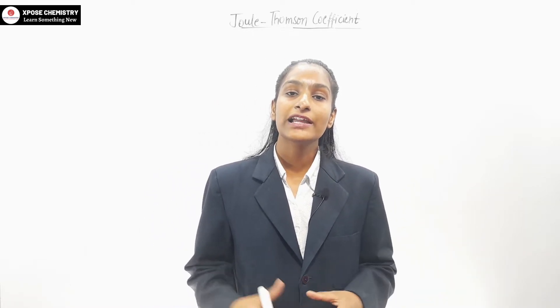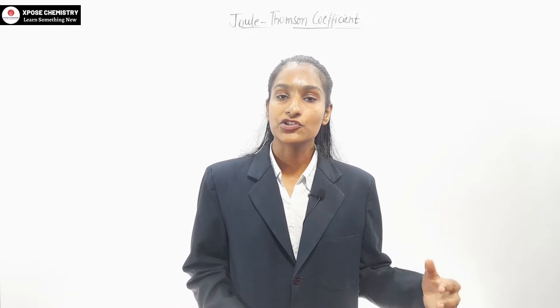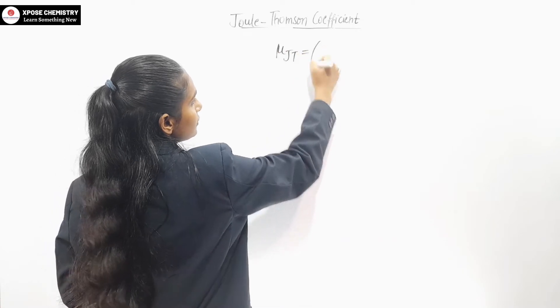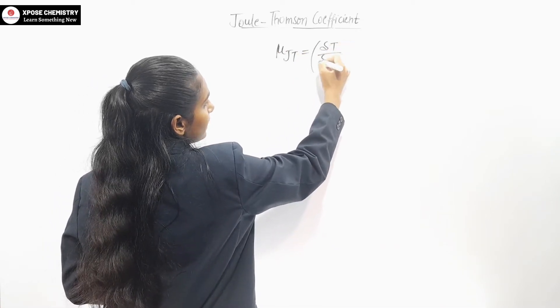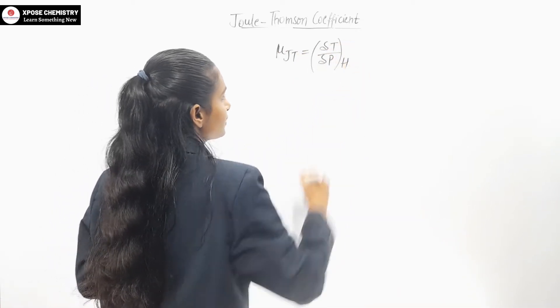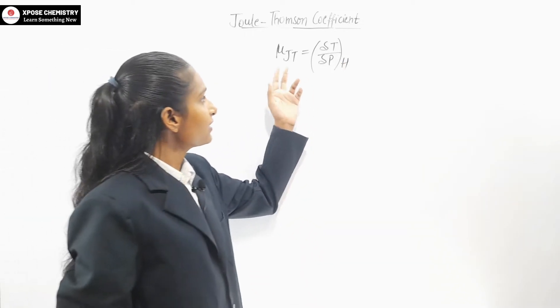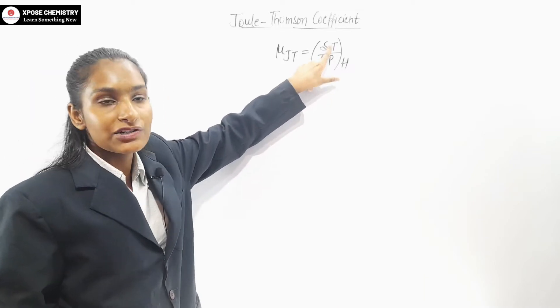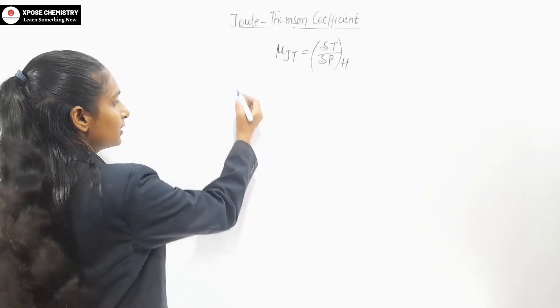What is the Joule-Thompson coefficient? Joule and Thomson observed that when a real gas expands adiabatically, it depends on the initial temperature and pressure. When there is no change in enthalpy — that is, there is constant enthalpy during expansion — we represent this mathematically as μJT equal to the change in temperature divided by the change in pressure at constant enthalpy.